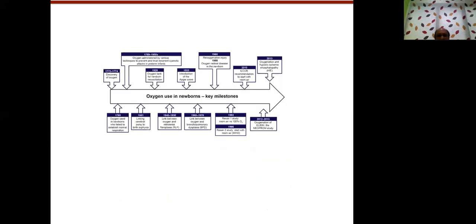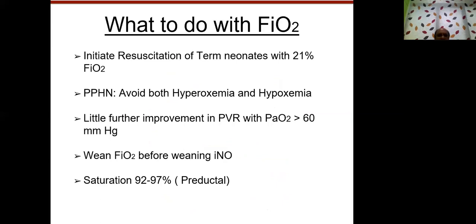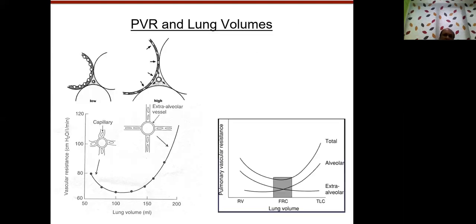Key lessons from oxygen therapy: start with 21% FiO2, avoid both hyperoxia and hypoxemia. There is no further improvement in PVR even if PO2 increases beyond 60, so try to achieve PaO2 around 60 to 80. Try to wean FiO2 before weaning nitric oxide, and try to keep saturations between 92-97%.